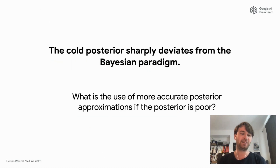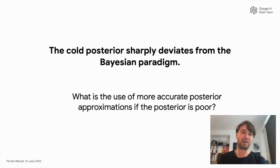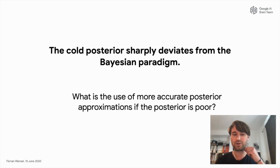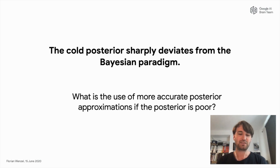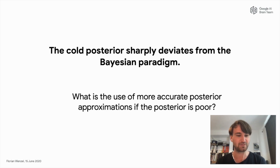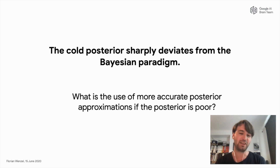This works well in practice, but we think there is a big problem, because cold posteriors sharply deviate from the Bayesian paradigm. In our opinion, this points to a fundamental problem which is important to explore if we want to make further progress in Bayesian deep learning. What is the use of better inference methods if the actual posterior is poor?